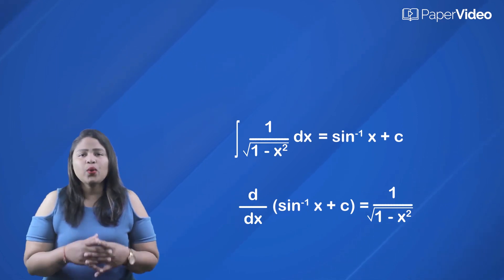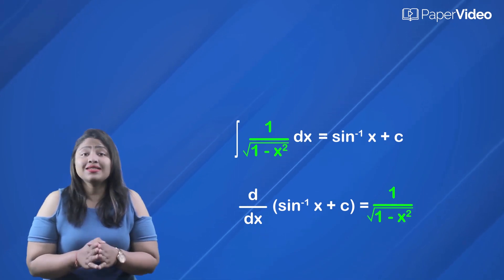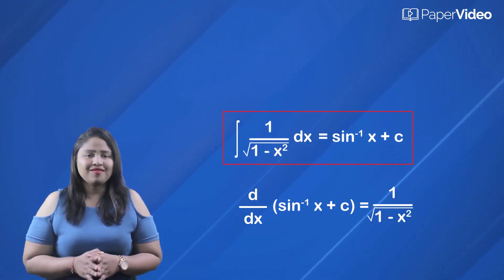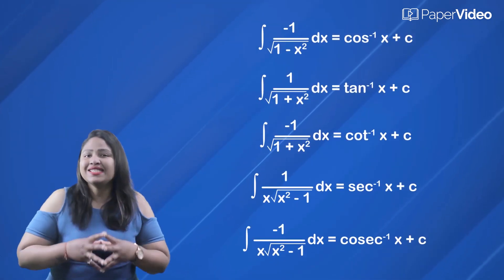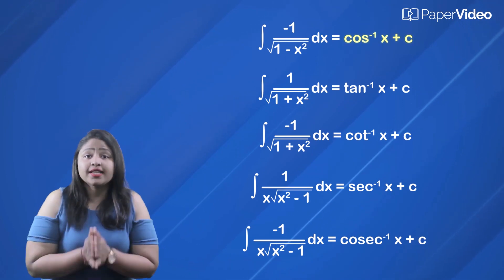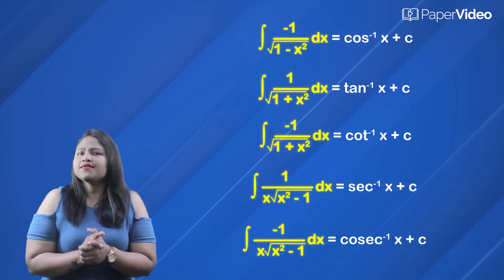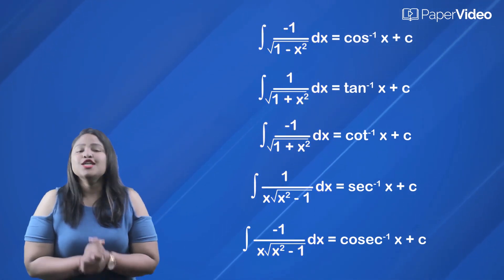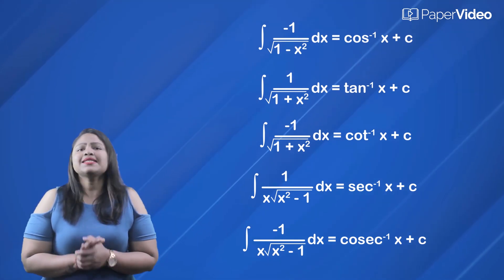On simplifying, we get 1 upon square root of 1 minus x squared, which is the same as the integrand. Therefore, this standard formula is verified. Similarly, we have five more standard formulas which help us to integrate standard rational and irrational functions easily. Just like we discussed, if we differentiate the expressions on the right-hand side, we will get their respective integrals. We are leaving this verification as a practice exercise for you, so try it yourself following the same steps that we used in our previous formulas. These standard formulas are very useful in integrating standard trigonometric, rational and irrational functions easily.